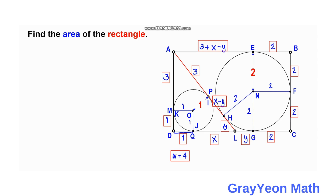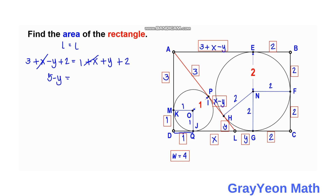Now we equate the length of the top of the rectangle to the length of the bottom. For the top: three plus X minus Y plus two. For the bottom: one plus X plus Y plus two. Canceling the X terms on both sides gives five minus Y equals Y plus three. Moving the Y terms, we get two Y equals five minus three, so two Y equals two, and therefore Y equals one.